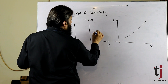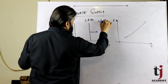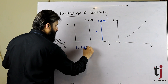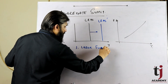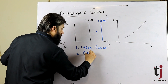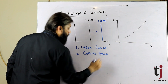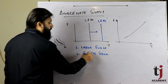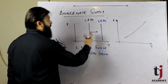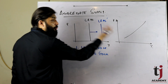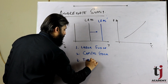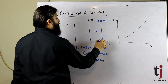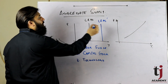Long run aggregate supply कब shift करती है? Long run aggregate supply तीन factors से shift होती है: Number one — labor force; number two — capital stock, जो economy की productive capacity determine करता है; number three — technology. अगर technology improve हो, तो potential level of production बढ़ जाता है और long run aggregate supply shift होती है।